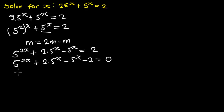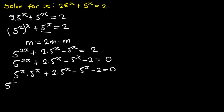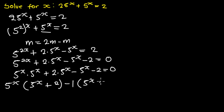From here I can rewrite 5 exponent 2x as 5 exponent x multiplying 5 exponent x, plus 2 of 5 exponent x, minus 5 exponent x, minus 2 is equal to 0. Now I'm going to factorize by grouping the first two terms and the last two terms. From the first group, 5 exponent x is common, so I pull that out to get 5 exponent x multiplying (5 exponent x plus 2), then minus 1 multiplying (5 exponent x plus 2) is equal to 0.